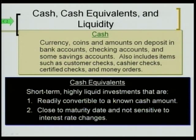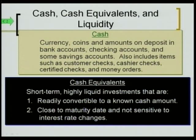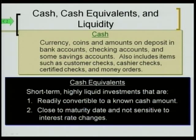When we talk about cash, we're not just talking about bills and coins — we're talking about access to checking accounts, savings accounts. Any access to the company's cash, even by check, credit card, or debit card. Cash equivalents are things that technically aren't cash but are short-term and so liquid we treat them similarly — such as a ninety-day certificate of deposit. They're so close to maturity that they're not sensitive to interest rate changes. We want to protect our cash and cash equivalents.